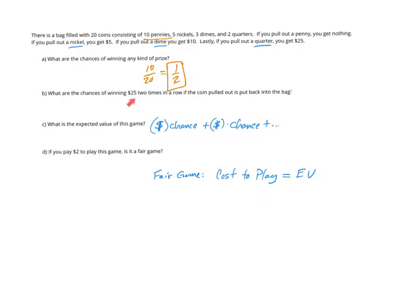Next, the chance of winning $25 two times in a row. We have to think about how to get $25. You have to pull a quarter out of the bag. Now if you pull a quarter out of the bag, which in this case there are two quarters out of the total 20, two out of 20 reduces down to 1 tenth. So you have a 1 out of 10 chance of getting a $25 win.